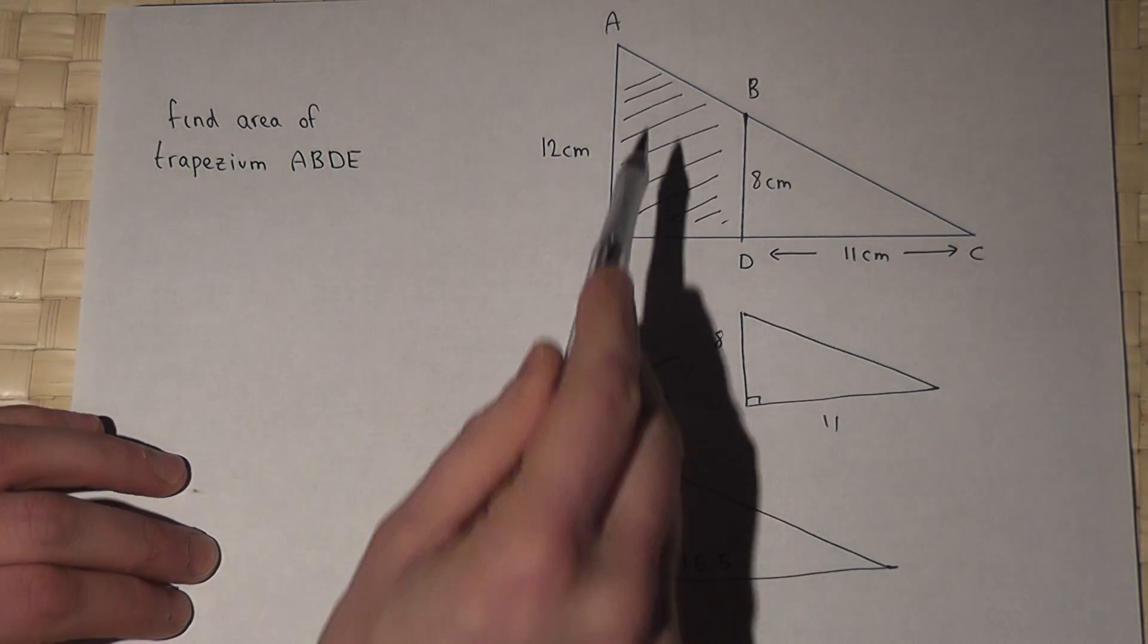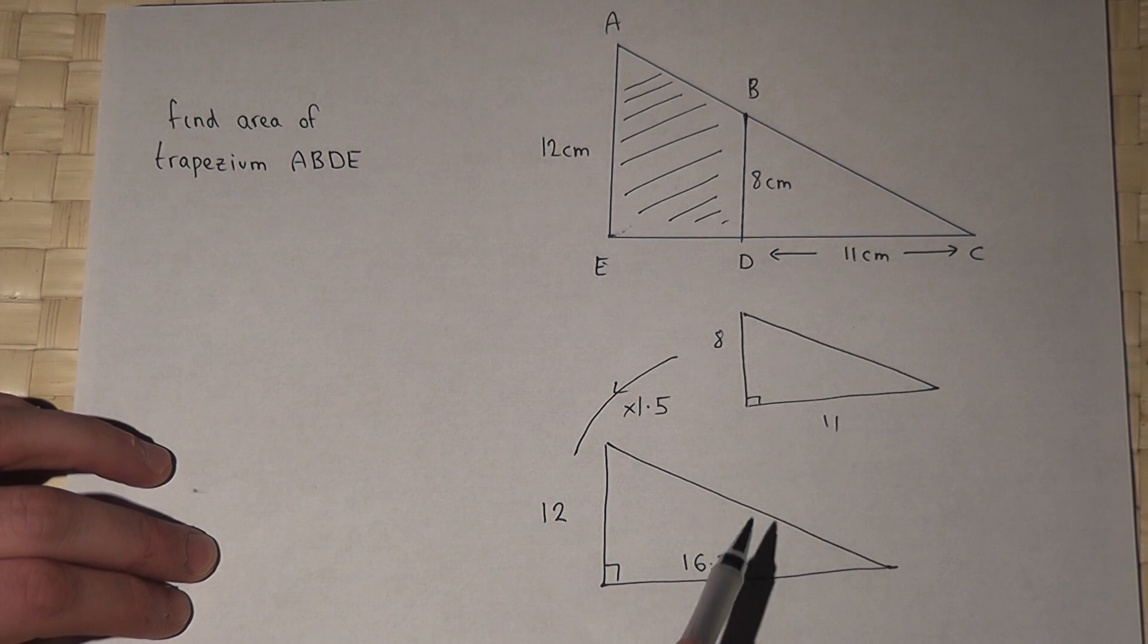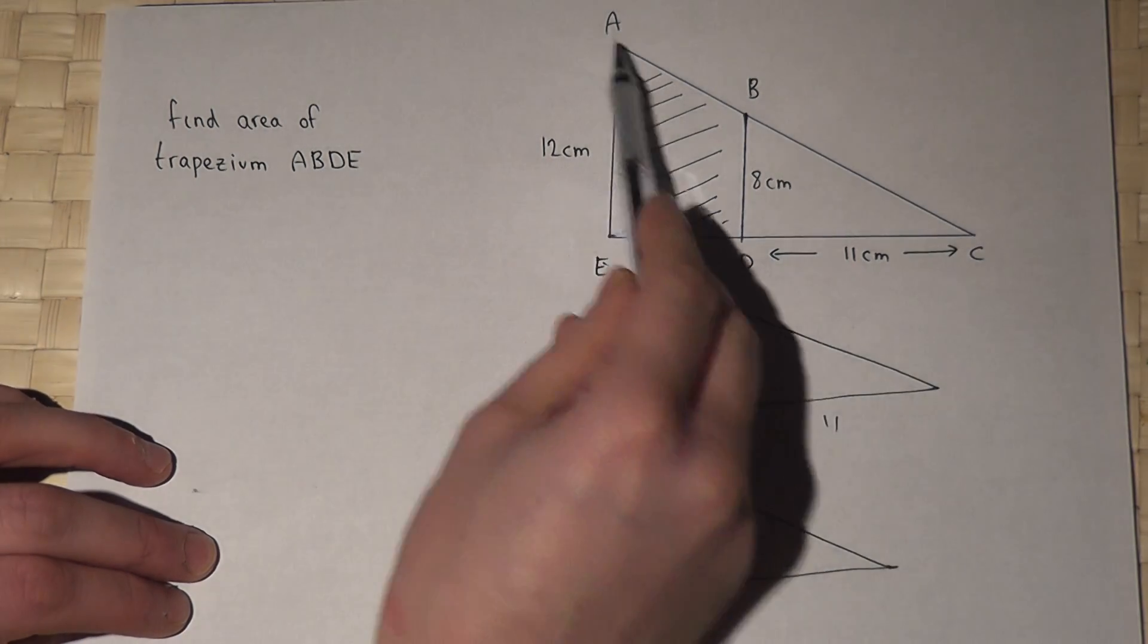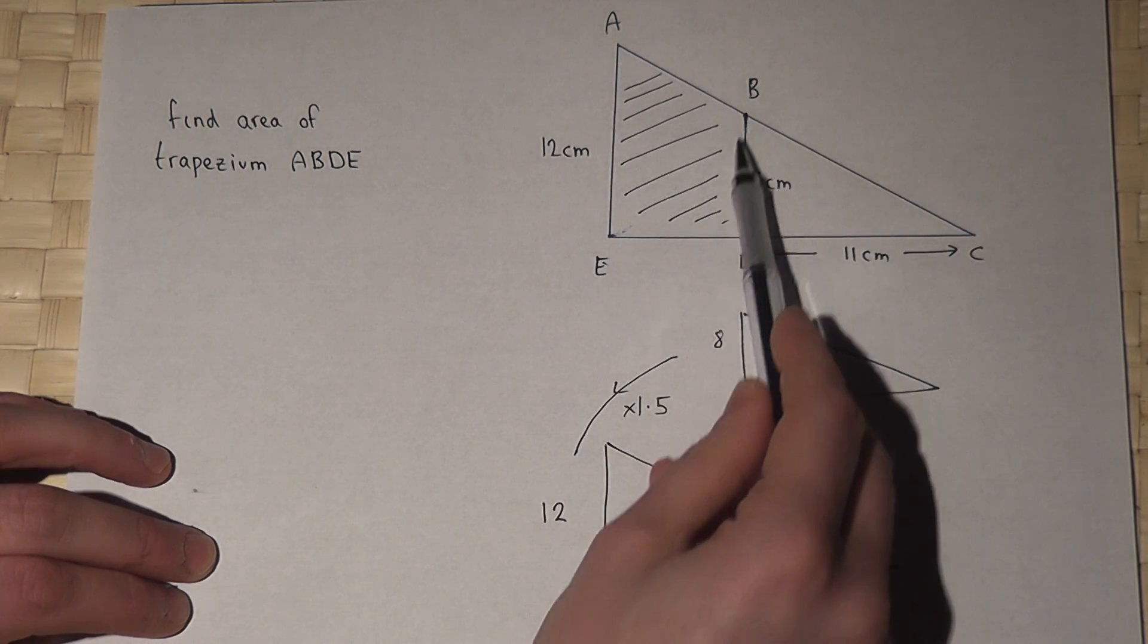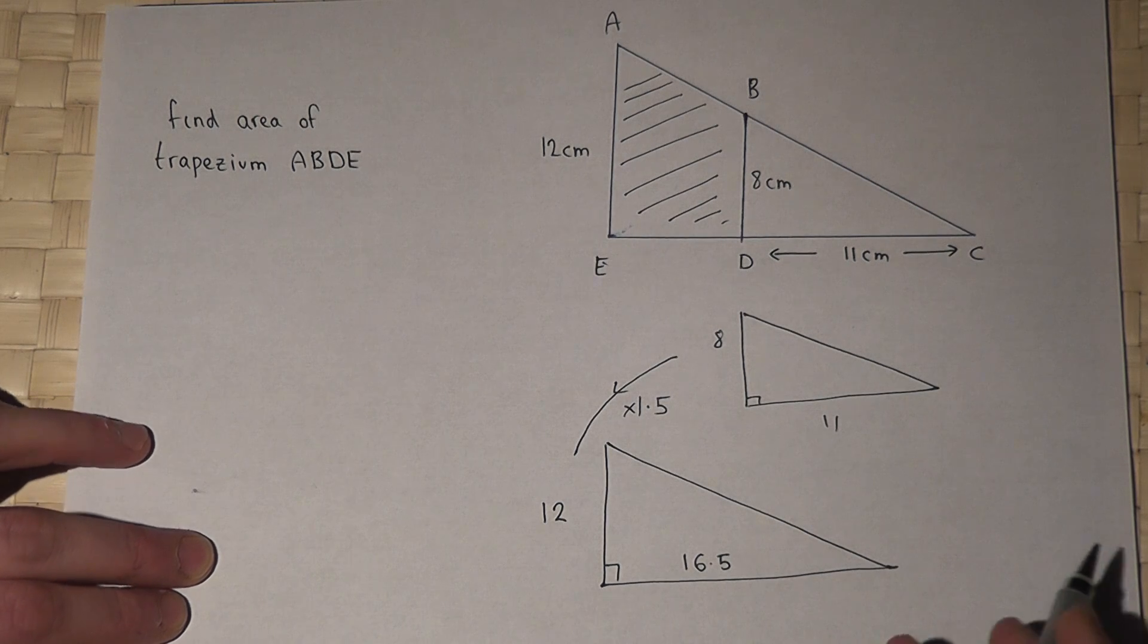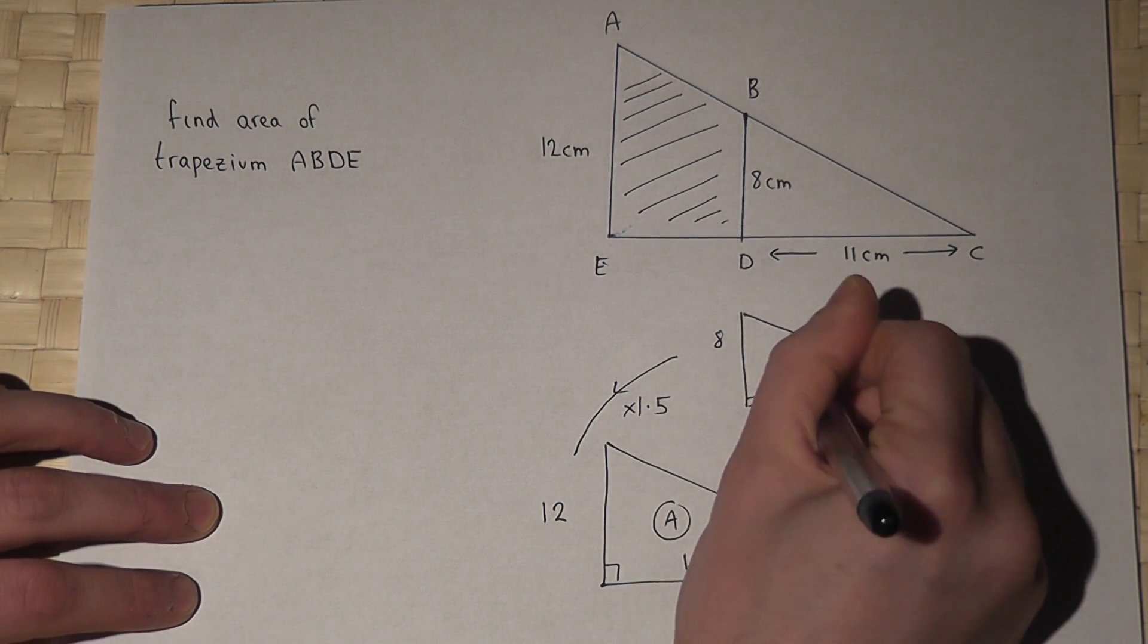So to find the area of the trapezium, I must do the large triangle area take away the small triangle area. So call that A and that B.